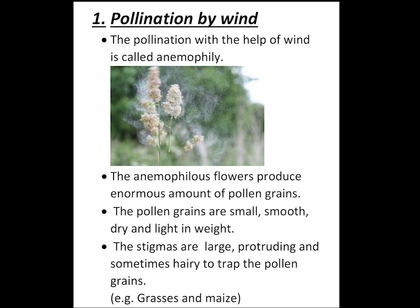Stigmas are comparatively large, protruding and sometimes hairy to trap the pollen grains. Stigmas are the female reproductive part of a flower. Protruding means projecting outside. So, stigmas are comparatively large, protruding and sometimes hairy to trap or catch the pollen grains. Then only pollination occurs and it is followed by fertilization. Examples of anemophily flowers are grasses and some cacti.